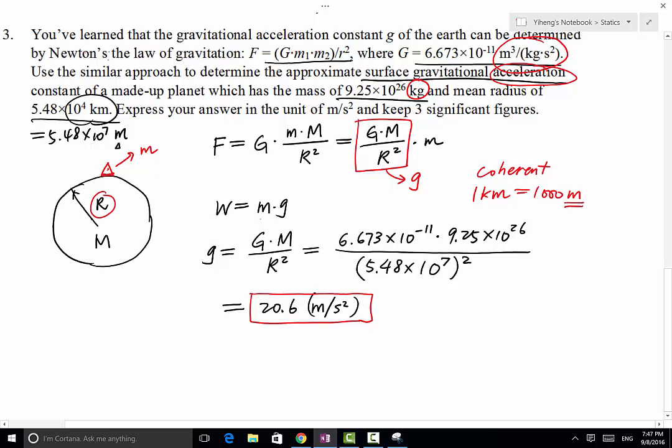kilometer is not a coherent unit because one kilometer equals to a thousand meters. Therefore, it is made by SI base unit with a coefficient other than one. Therefore, this is not coherent.